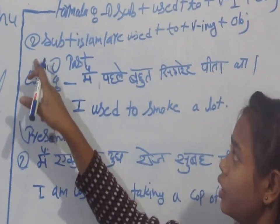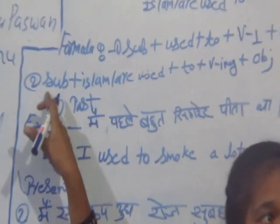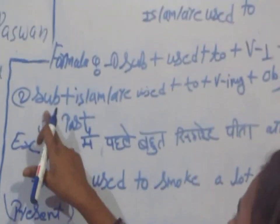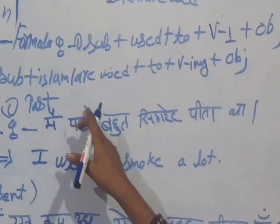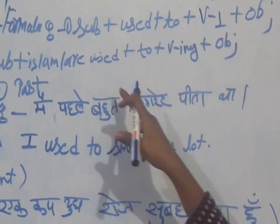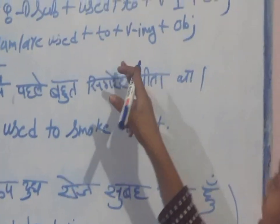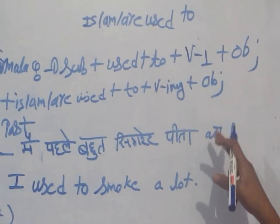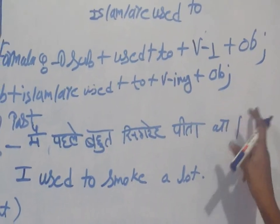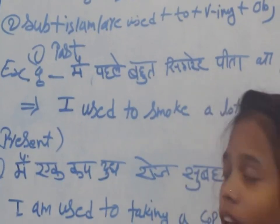And present: subject plus 'is/am/are' plus 'used to' plus verb plus '-ing' form plus object.